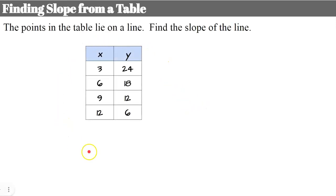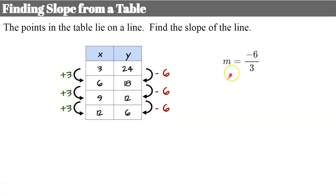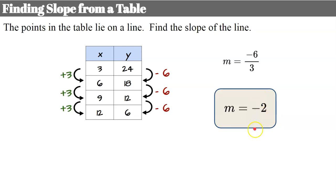We can also find slope from a table of values. If given a table of values representing points on a line, we look for the ratio of the change in y over the change in x. Here x increases by 3 each time, while y decreases by 6 each time. So our slope is negative 6 over 3, which simplifies to negative 2. The slope of this line is negative 2.